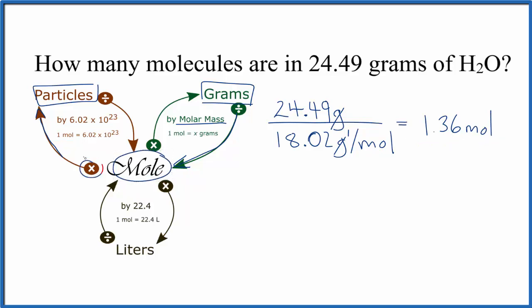So now that we have moles, we can multiply by Avogadro's number. That's 6.02 times 10 to the 23rd. That'll look like this. So we have the moles that we found here, when we converted from grams to moles. Now we multiply by Avogadro's number.